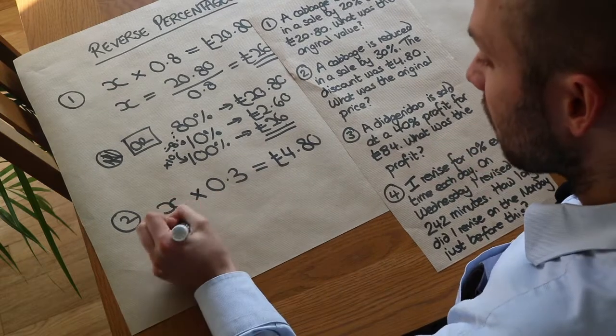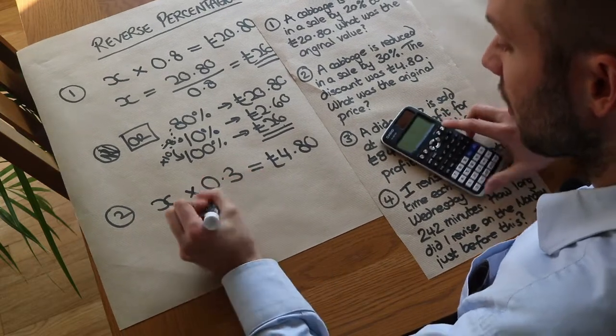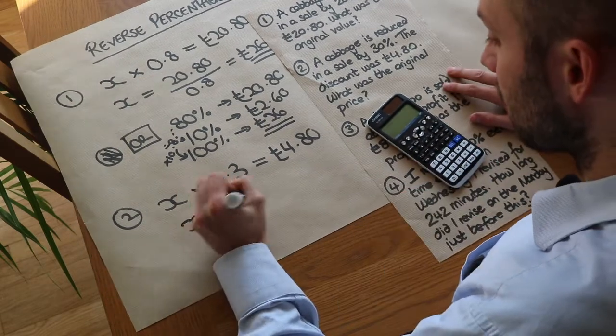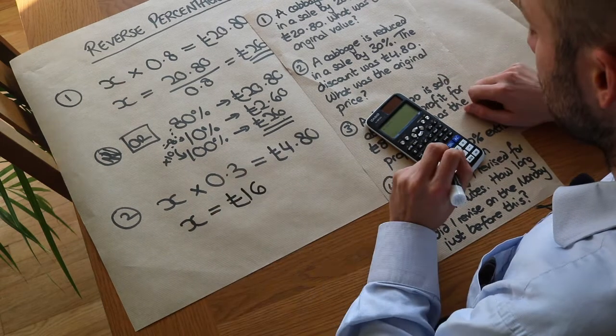And then as before to undo the times by 0.3 we could do £4.80 divided by 0.3. And that tells us the original value was £16.